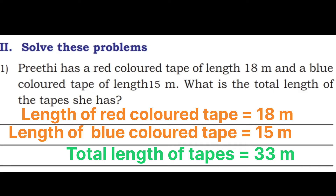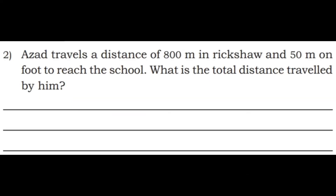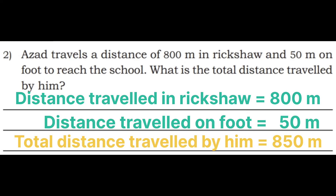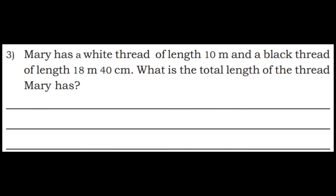Second problem: Azad travels a distance of 800 meters by rickshaw and 50 meters on foot to reach school. What is the total distance traveled by him? Distance by rickshaw = 800 m; distance on foot = 50 m. Total: 0 + 0 = 0; 0 + 5 = 5; 8 remains. Total distance = 850 meters.